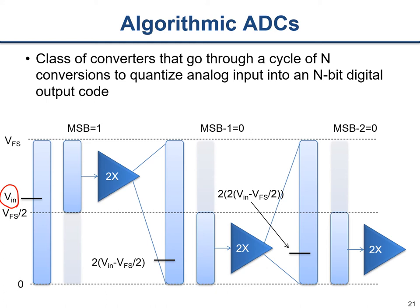A representative implementation from the Sarpeshkar textbook: the input goes through a MUX into a sample-and-hold, then to a comparator whose output goes to a register storing the bit sequence. A V_ref/4 reference is added to the sample-and-hold signal, multiplied by 2, fed back into the sample-and-hold, and the process repeats. This structure certainly works but is not super common. What we typically see instead are pipeline ADCs or SAR ADCs that use this general concept.